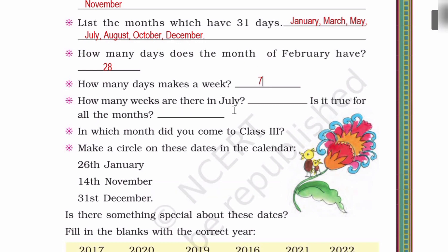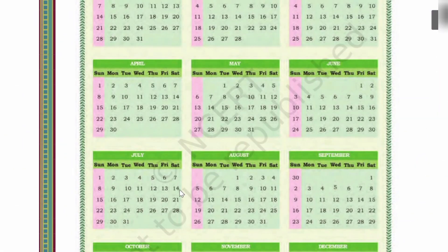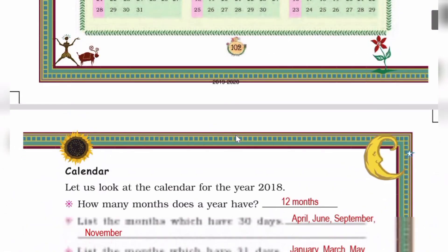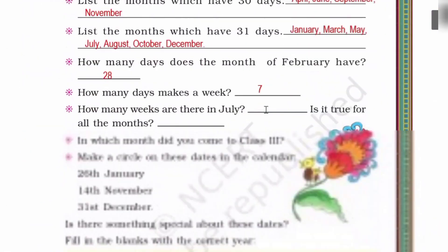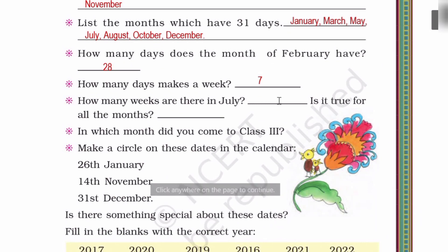How many weeks are there in July? Is it true for all the months? July has 1 week, 2 weeks, 3 weeks, 4 weeks — 4 weeks. Now is it true for all the months? Suppose in May: 1, 2, 3, 4 weeks. April: 1, 2, 3, 4 weeks. September: 1, 2, 3, 4 weeks. Yes, it's true for all the months. So here you can write 4.